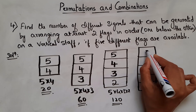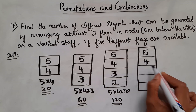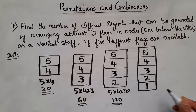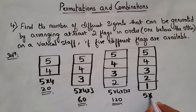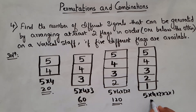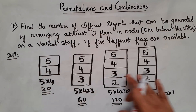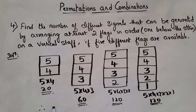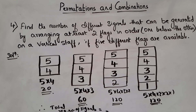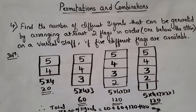With 5 flags: the positions give 5, 4, 3, 2, and 1 ways. So 5 into 4 into 3 into 2 into 1 is 120 ways. Since the question asks for at least 2 flags, the total required number of signals is 20 plus 60 plus 120 plus 120, which equals 320.